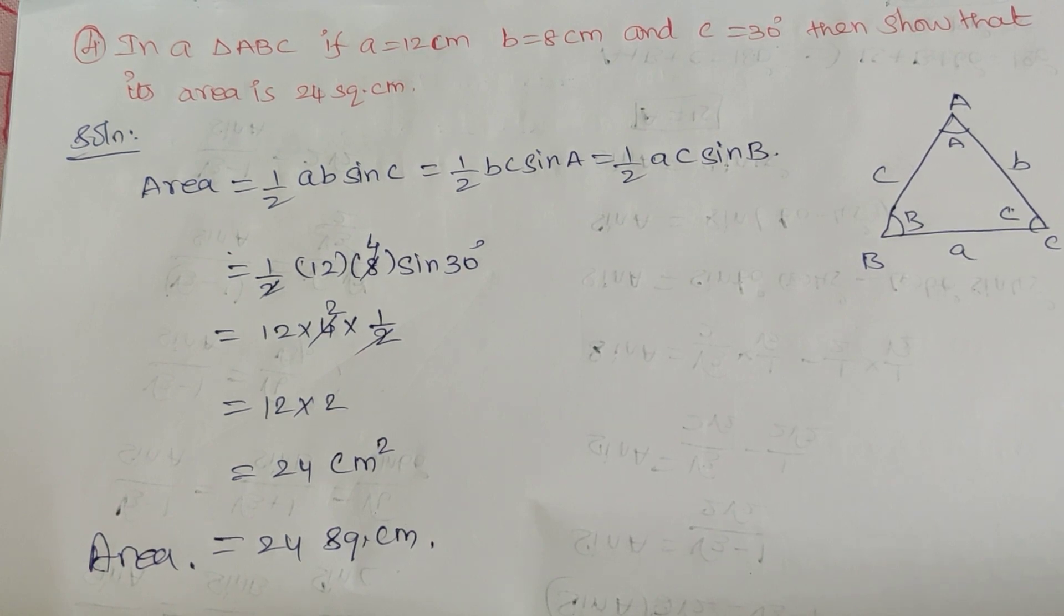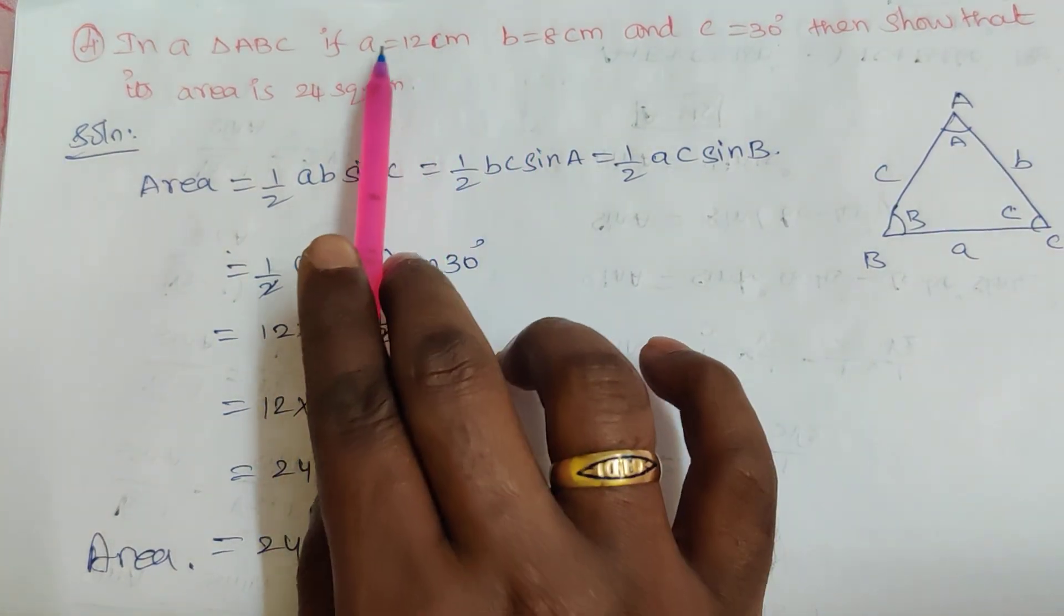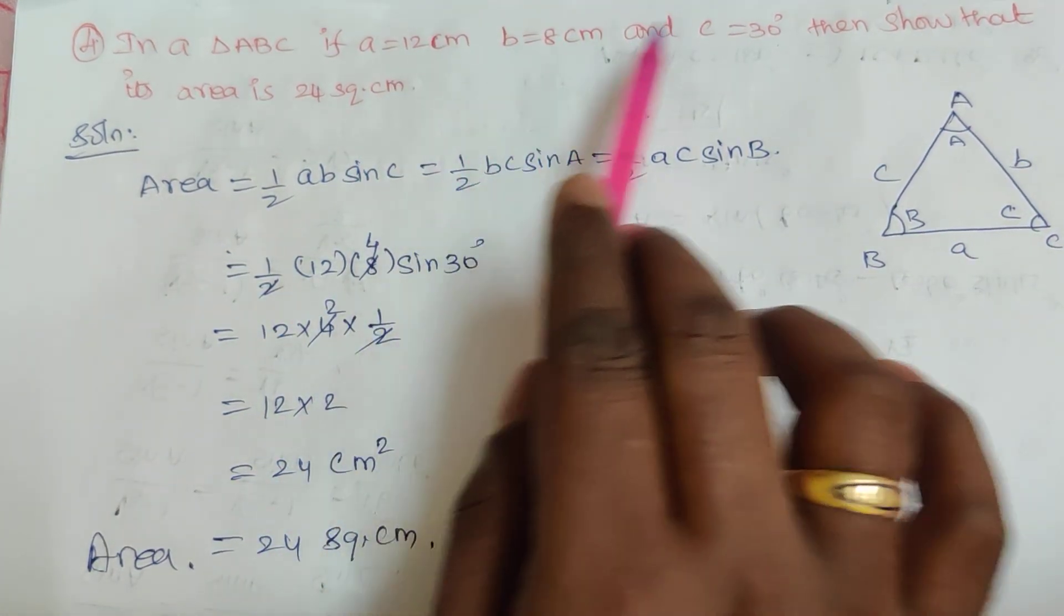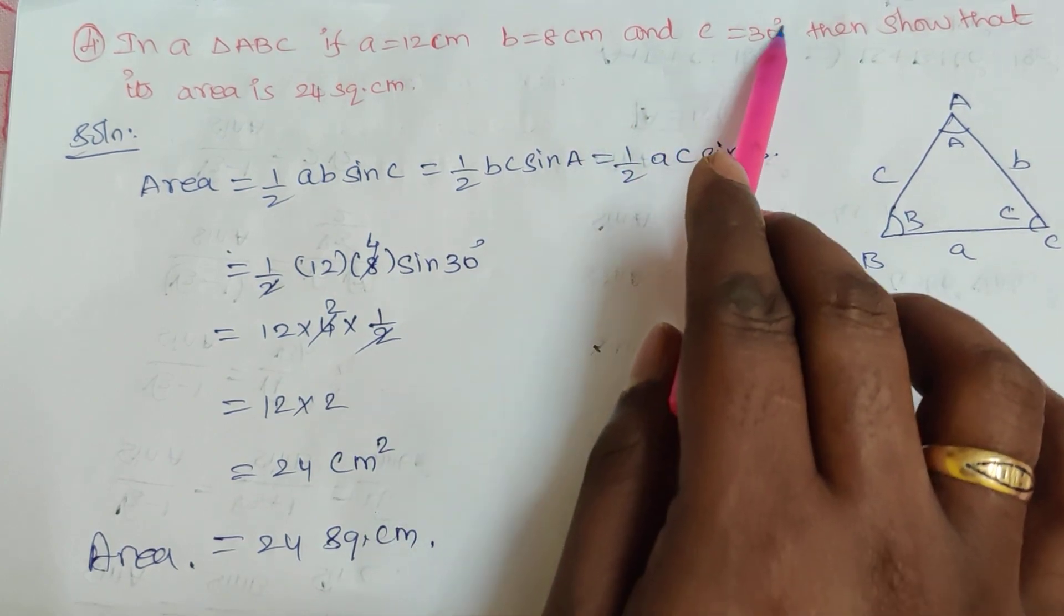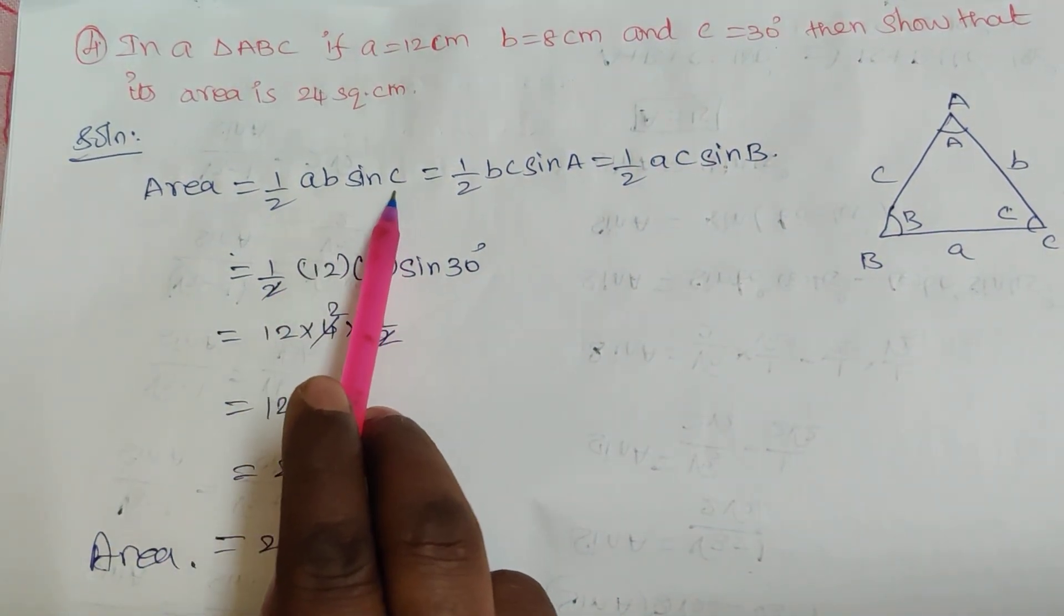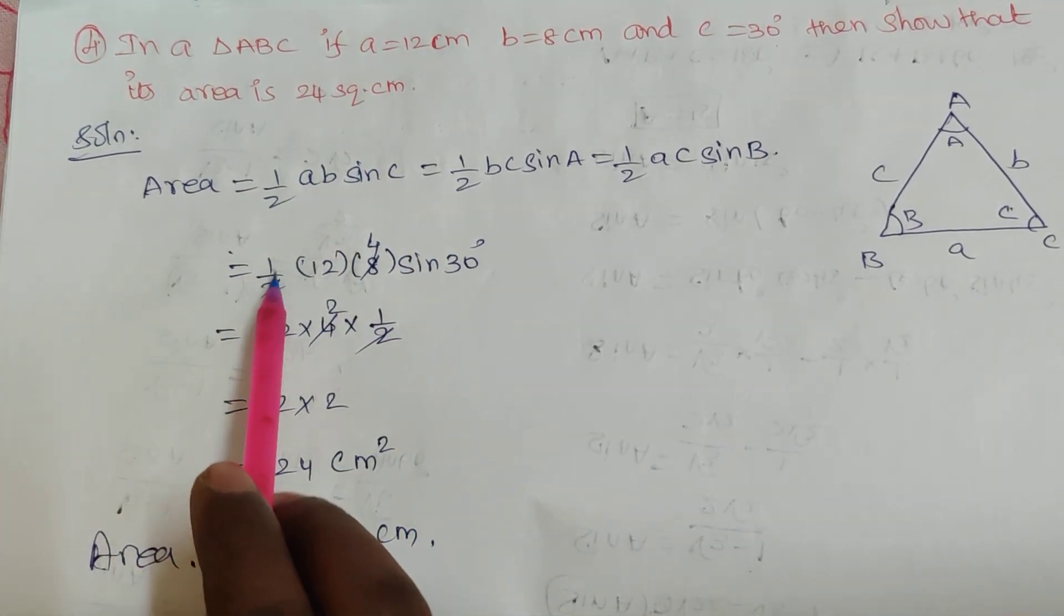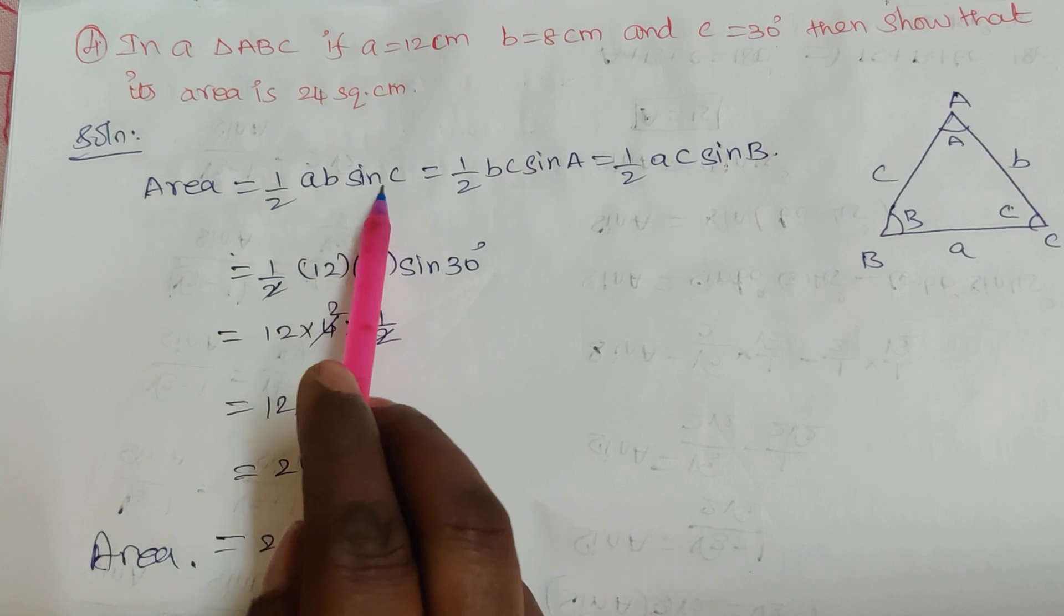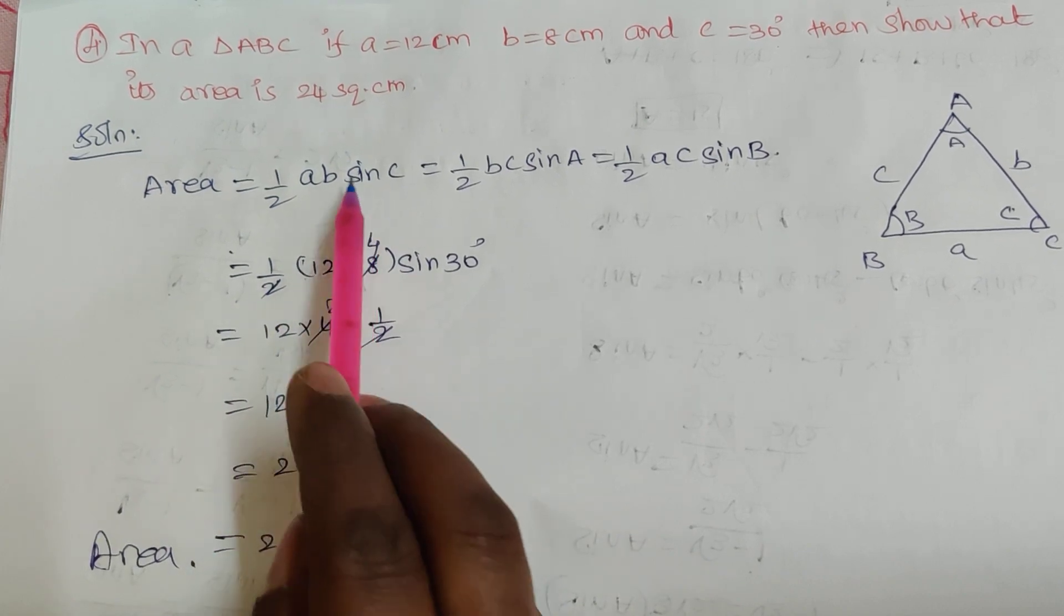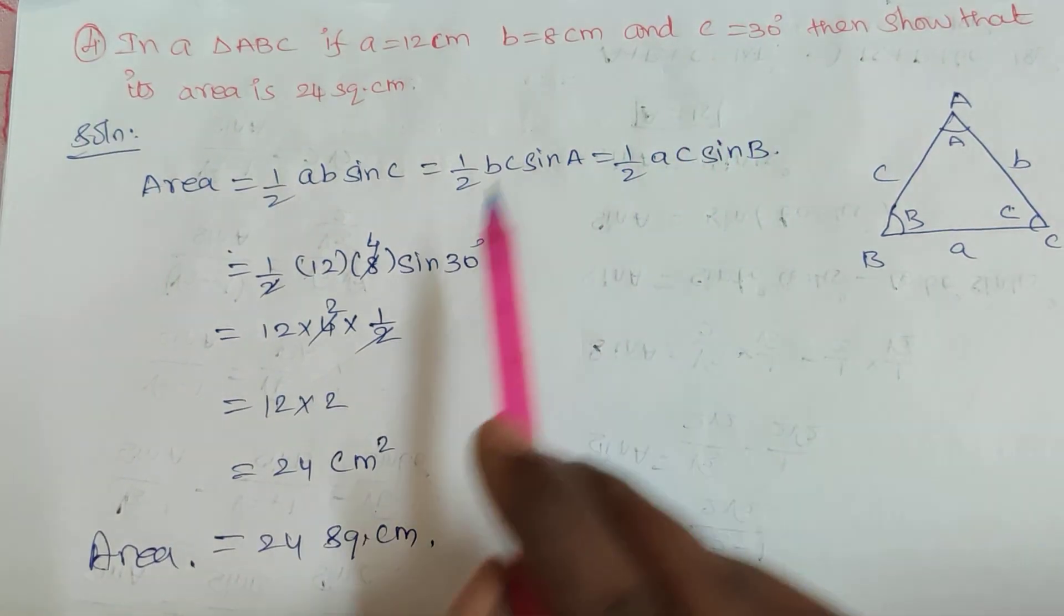Now we will use this formula. We have A, B, and angle C. So area is equal to 1/2 AB sin C. A value is 12, B value is 8, and sin C value is 30 degrees.